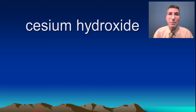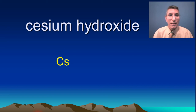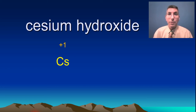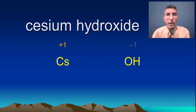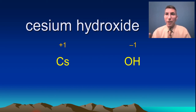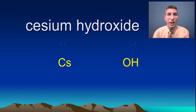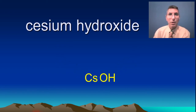Let's try cesium hydroxide. Cesium has the symbol Cs with a charge of positive one. Hydroxide is a polyatomic ion — you won't find it on the periodic table, but it's on the ion chart. Hydroxide is OH with a charge of negative one. The charges cancel out — plus one and minus one — so we just put the symbols together: CsOH.